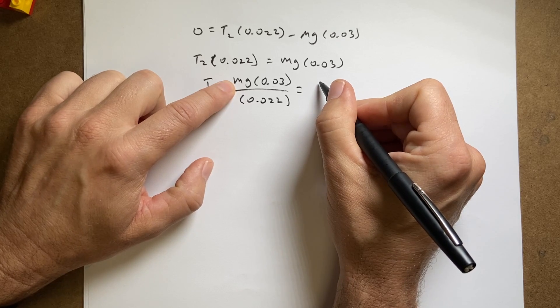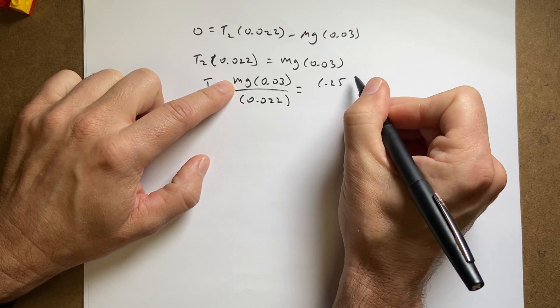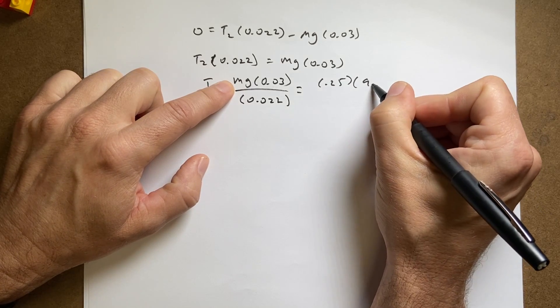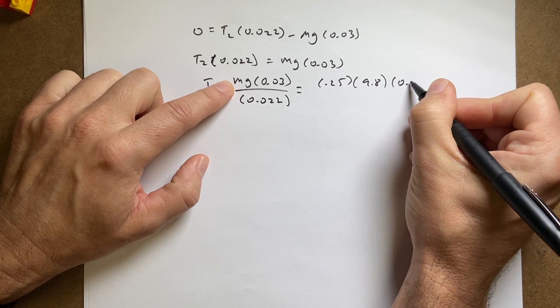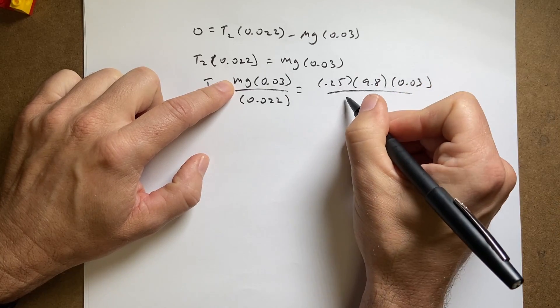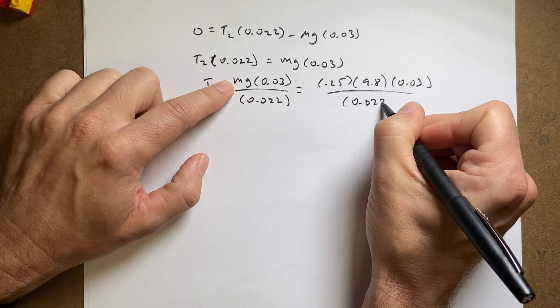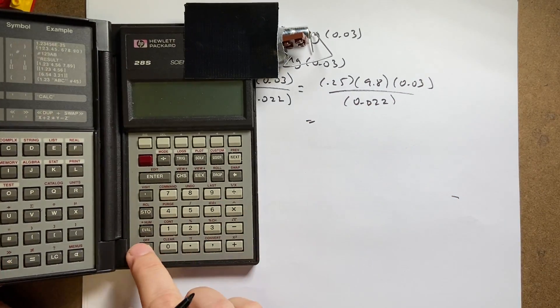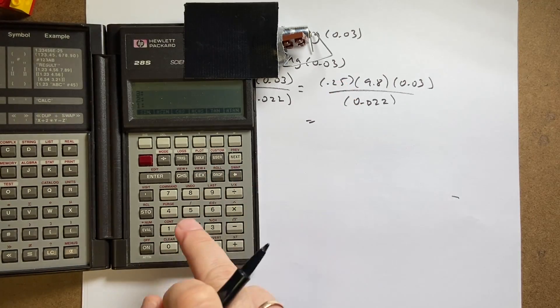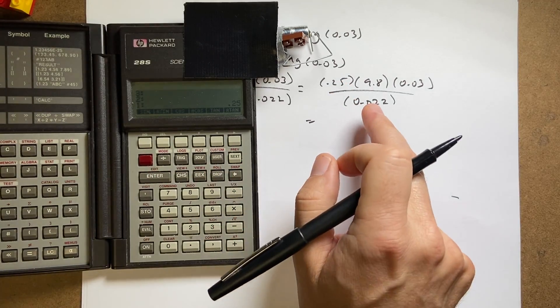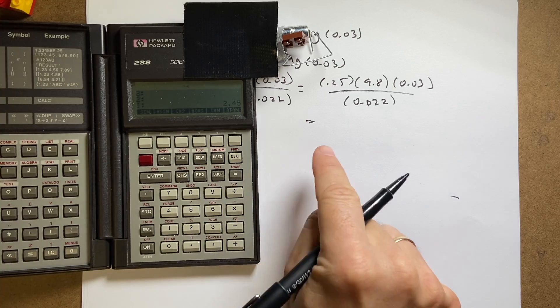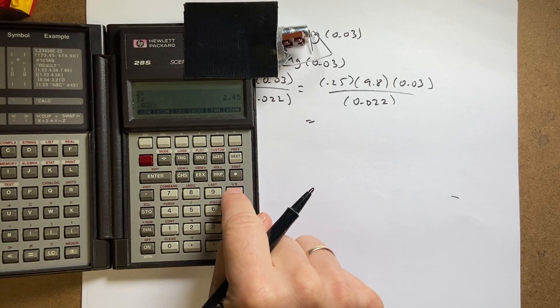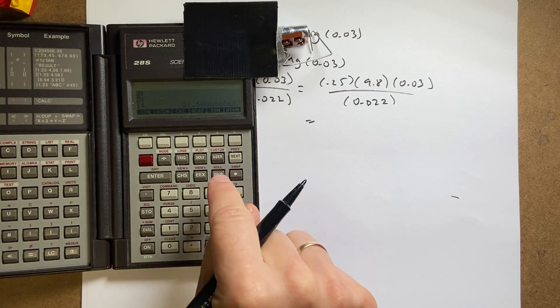So the mass was 250 grams, so it's going to be 0.25 kilograms times g is 9.8 times 0.03 divided by 0.022. And I left off the units, because that's what I do, so let's put this in my calculator. I get 0.25, 9.8 times 0.03 times, oops, I just did divide by, let's just start over.